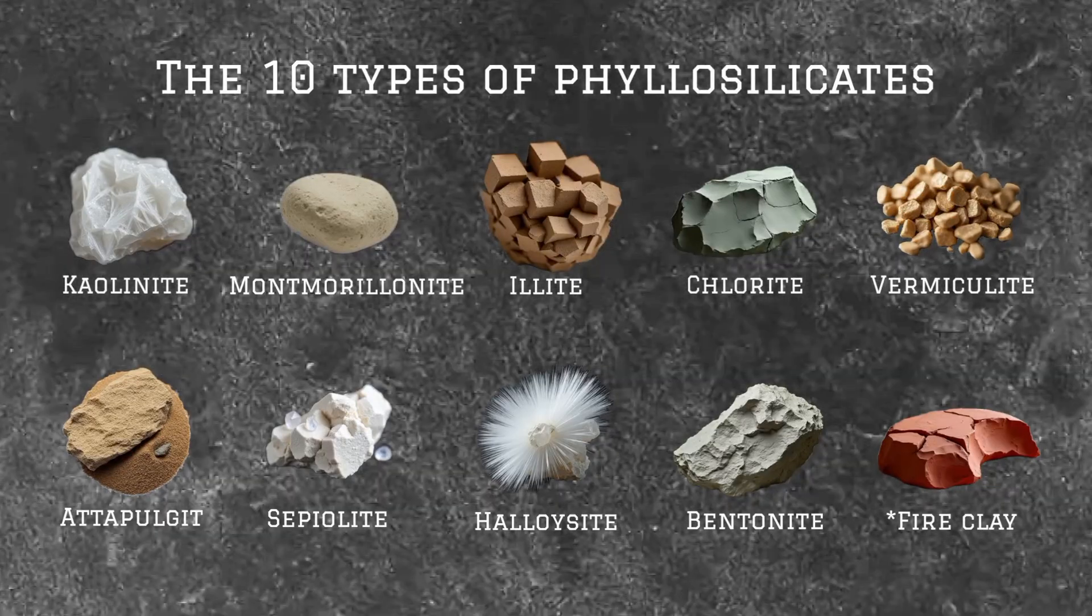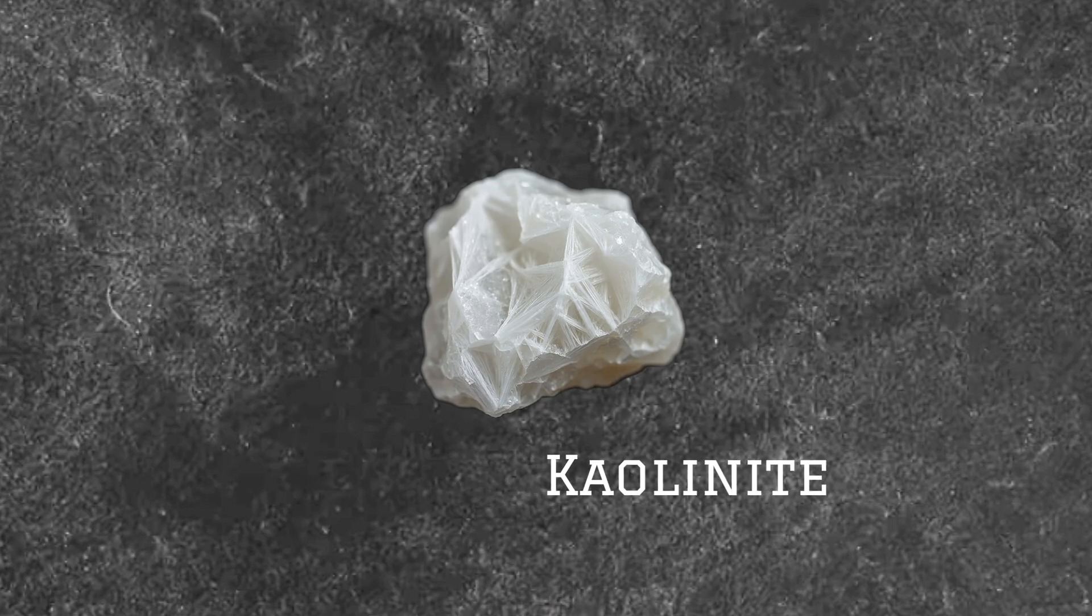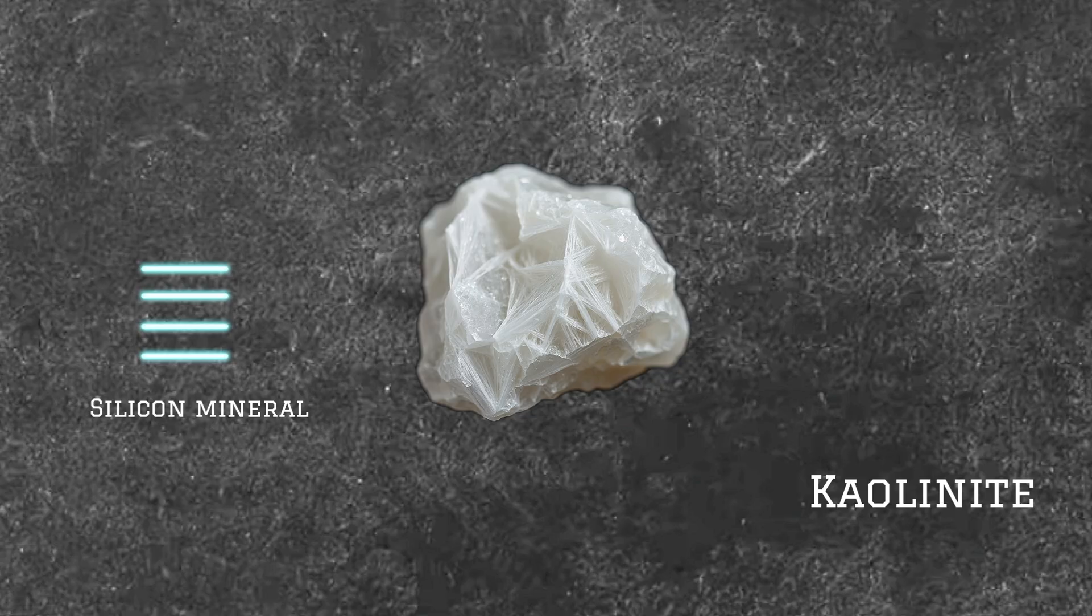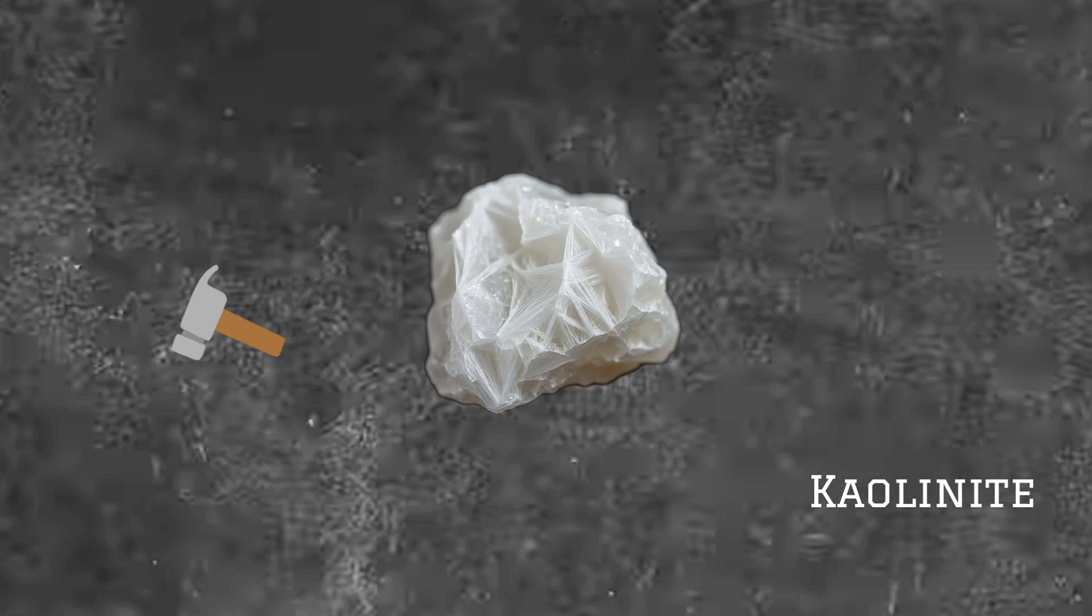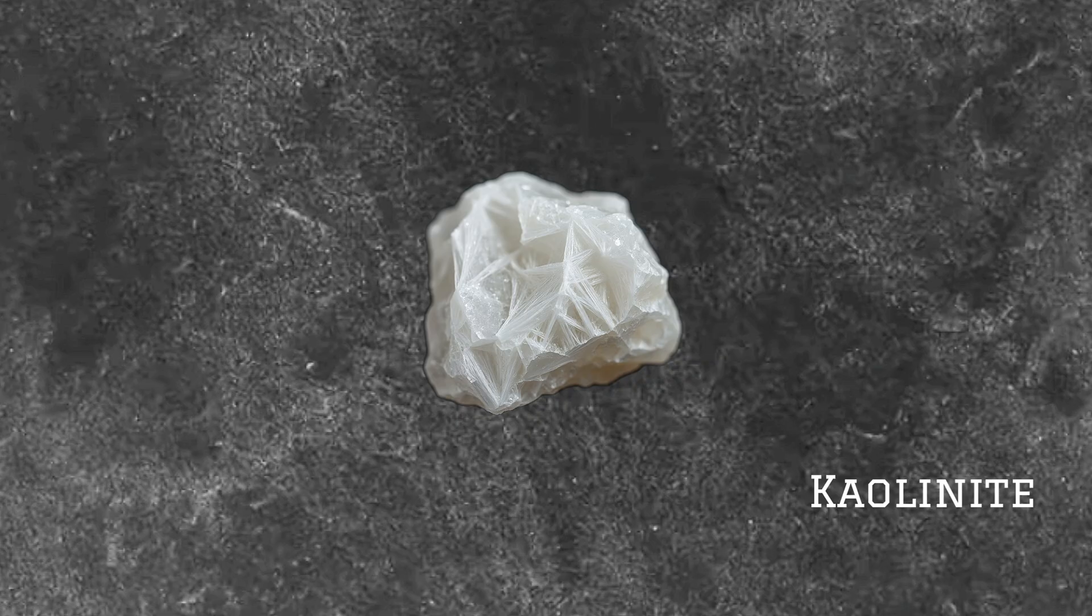10 types of clays from around the world. Kaolinite. Kaolinite is a layered silicate mineral that typically appears white and is formed through the chemical weathering of aluminum silicate minerals like feldspar.